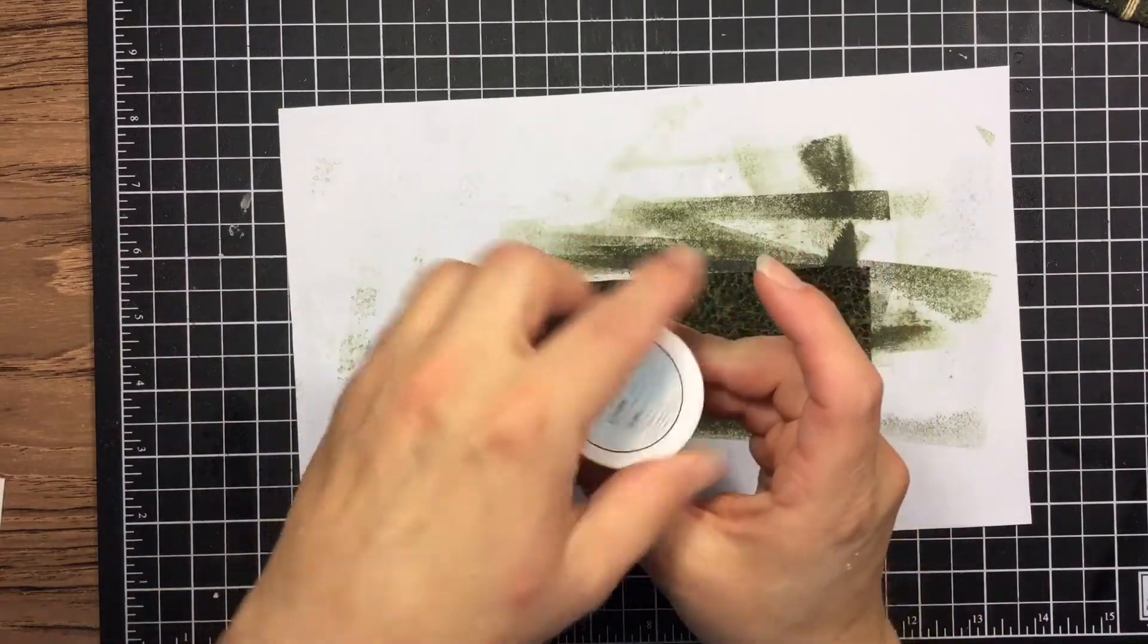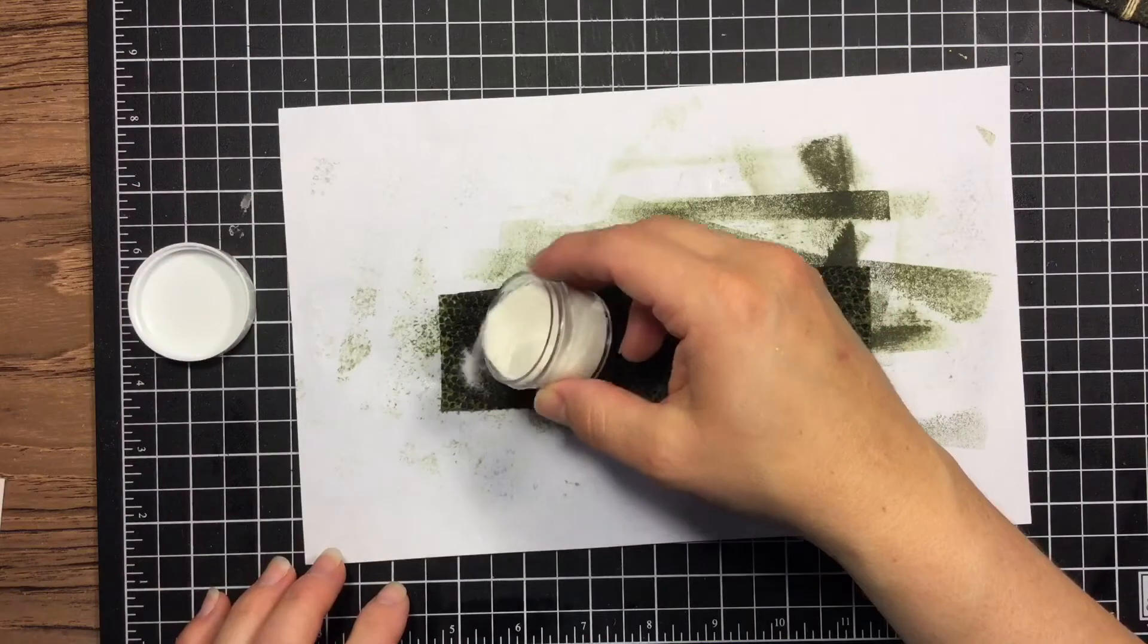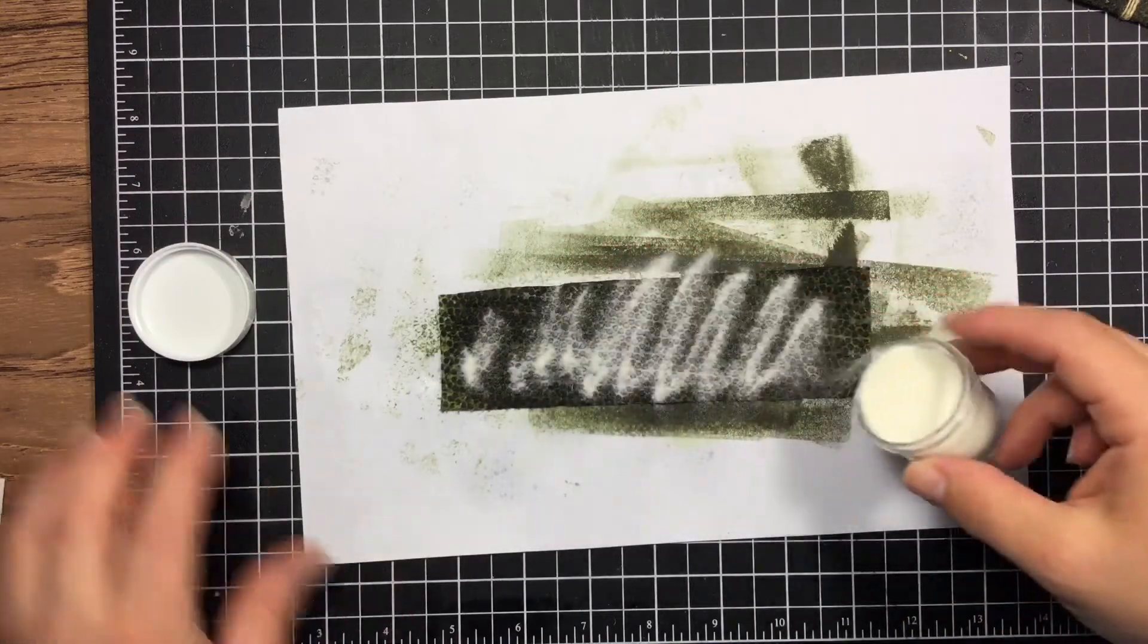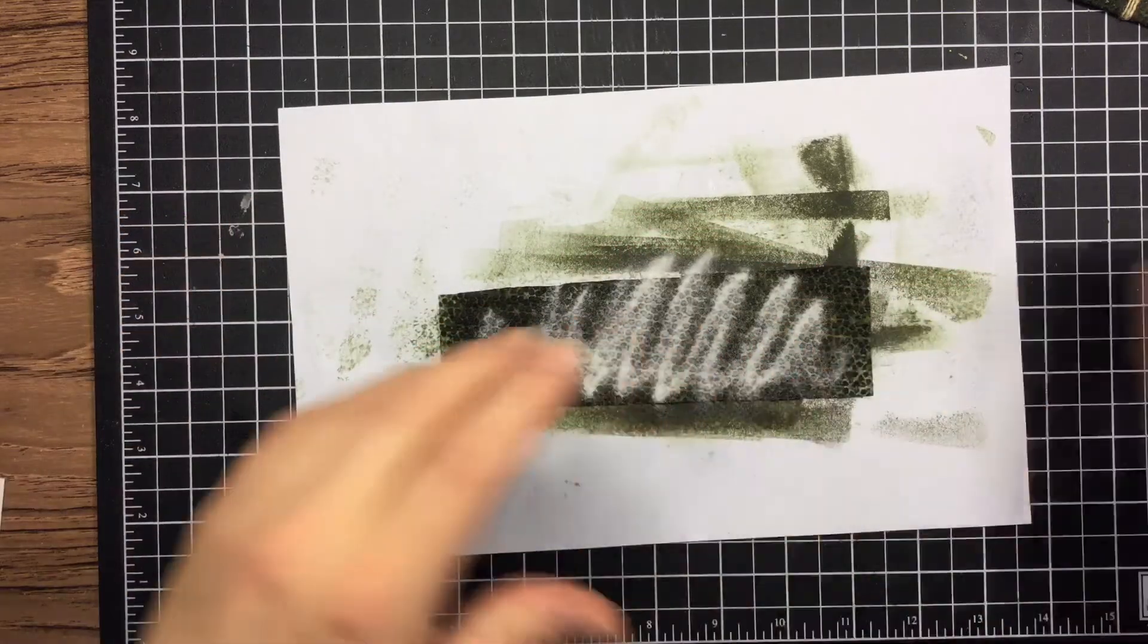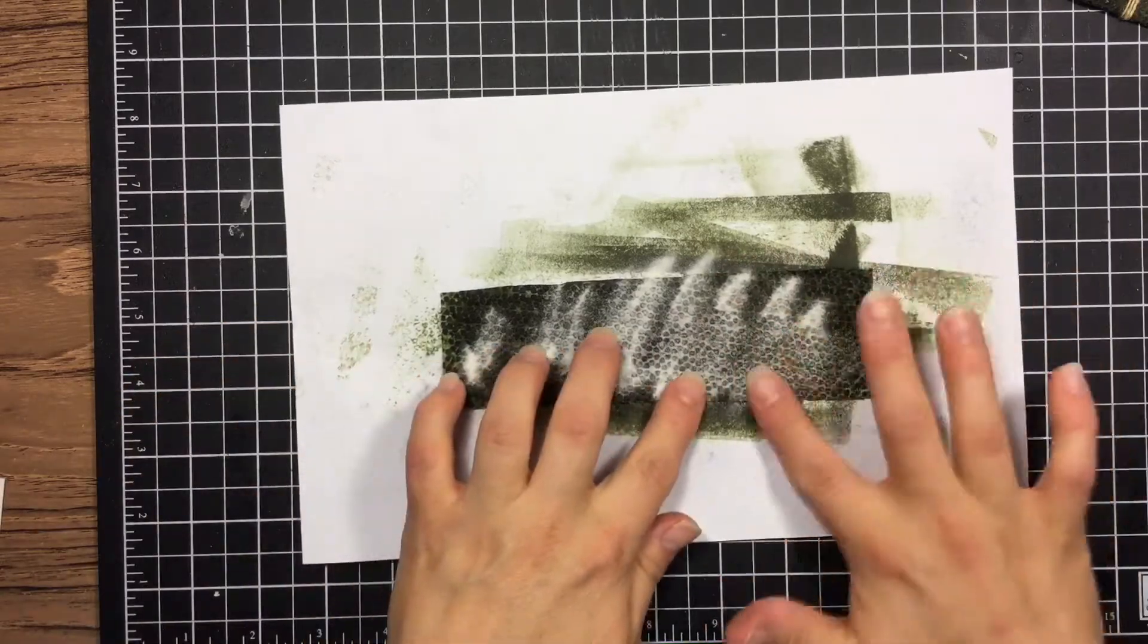So we're going to take some clear embossing powder and just sprinkle a little bit over the top there and spread it around. Because the paper towel is still wet, that's going to stick to this.